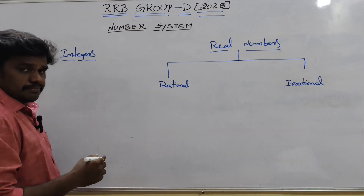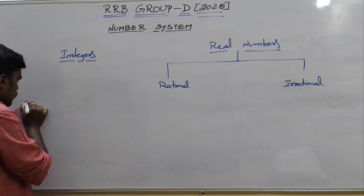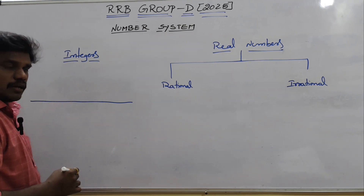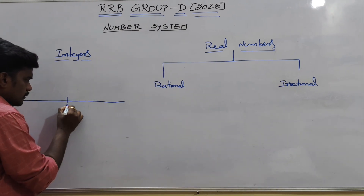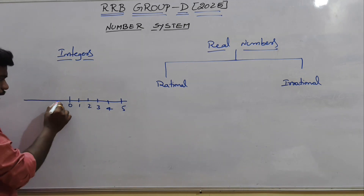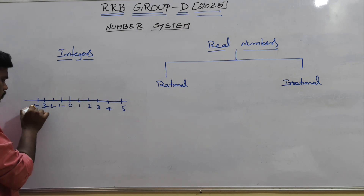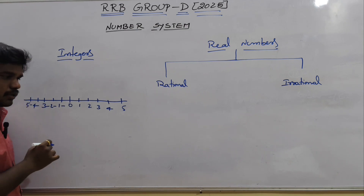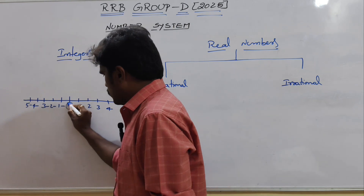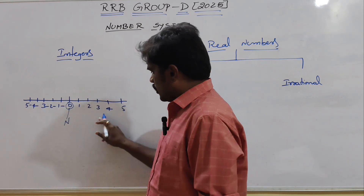Next topic is integers. I think everybody has seen a number line graph. On the right side: 0, 1, 2, 3, 4, 5. On the left side: minus 1, minus 2, minus 3, minus 4. All of these are integers. Zero is neutral — it is neither negative nor positive. All the other numbers are integers.